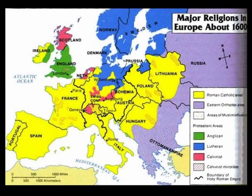This map shows the major religions in Europe at about 1600. The yellow on the map represents the Roman Catholics — those are the people who follow the Pope. The green on the map represents the Anglicans, or those that fell into the Church of England, led by King Henry and his children. The blue on the map represents those who fell into Lutheranism and followed Luther's beliefs, while the pink represents those who subscribe to the beliefs of Calvin.